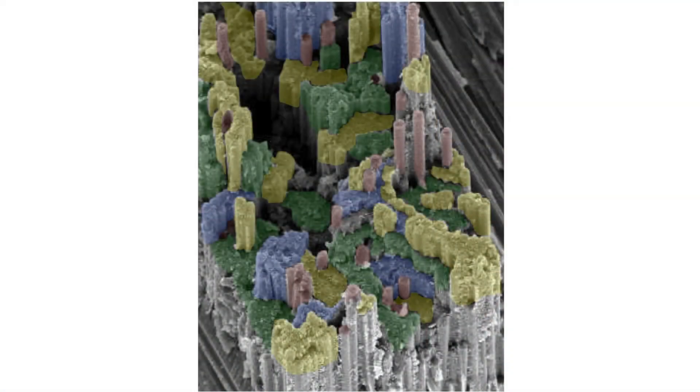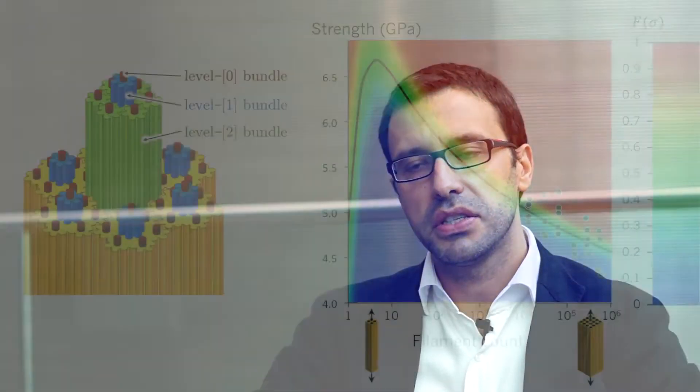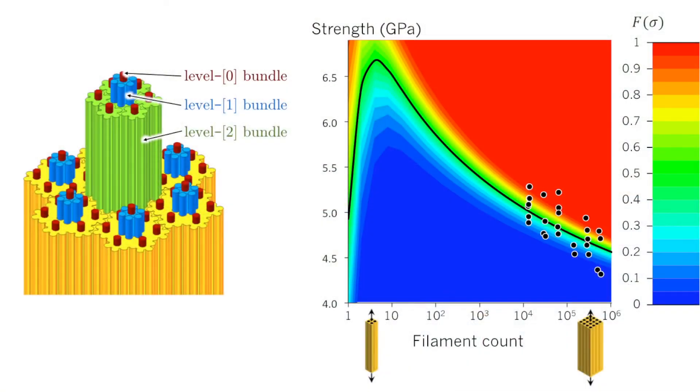One implication of this is that in larger bundles or in thicker zero-degree ply blocks, more scales can be fitted. This suggests that there should be a size effect in the strength and in the toughness of fibre bundles and of zero-degree plies that is related to the formation of these statistically self-affined structures.